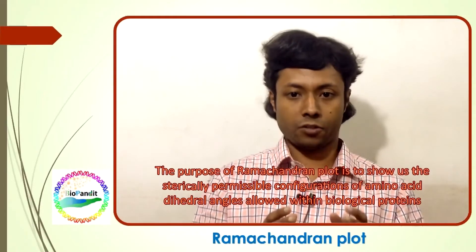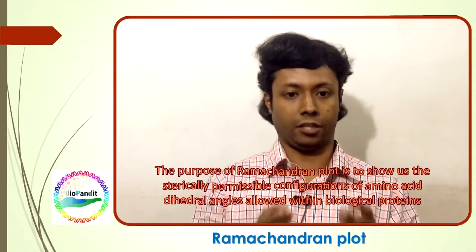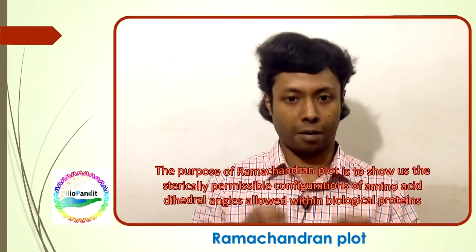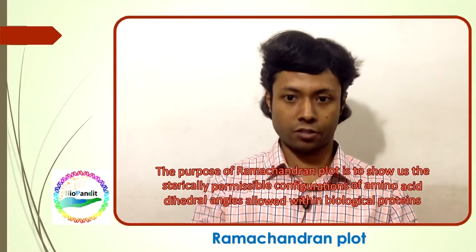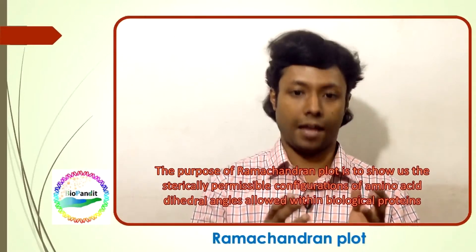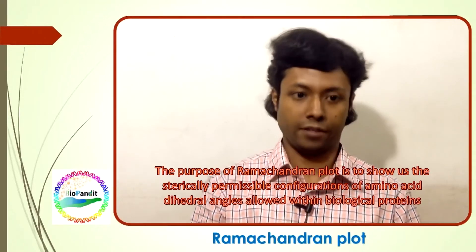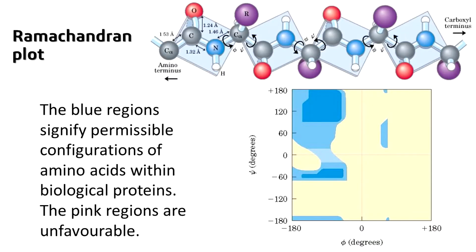The purpose of the Ramachandran Plot is to show us the sterically permissible configurations of amino acid dihedral angles allowed in biological proteins. These configurations are expressed in terms of phi and psi angles of the amino acids of the polypeptide chain.